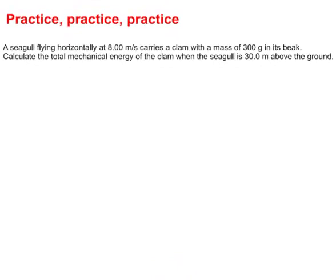We have a seagull flying horizontally at 8.00 meters per second, carries a clam that has a mass of 300 grams in its beak. Calculate the total mechanical energy of the clam when the seagull is 30 meters above the ground. I'll tell you what I'm going to do right now. I'm going to make these grams into kilograms by converting this into 0.300 kilograms, because I know that all these calculations are based upon kilograms, meters, and seconds.